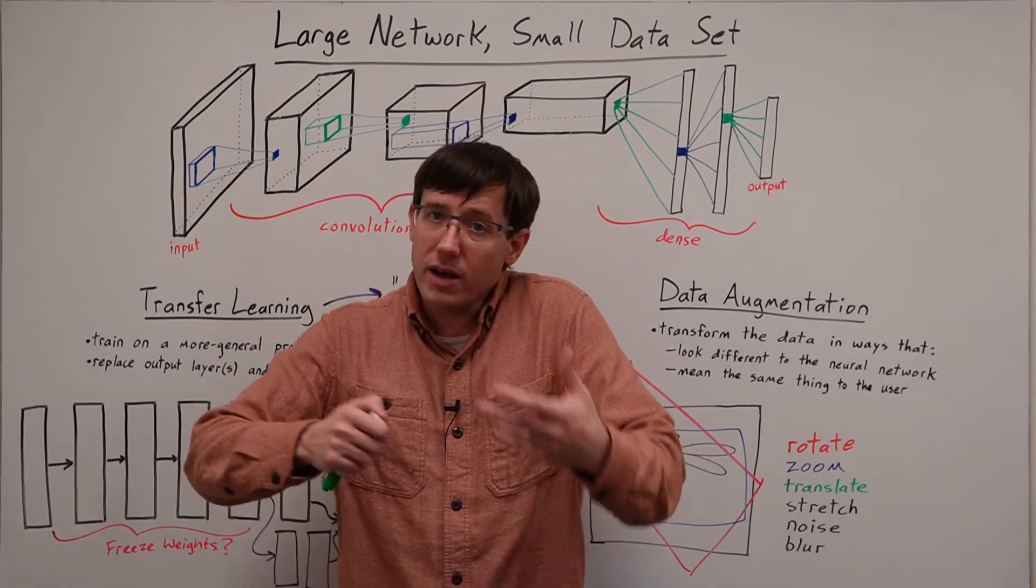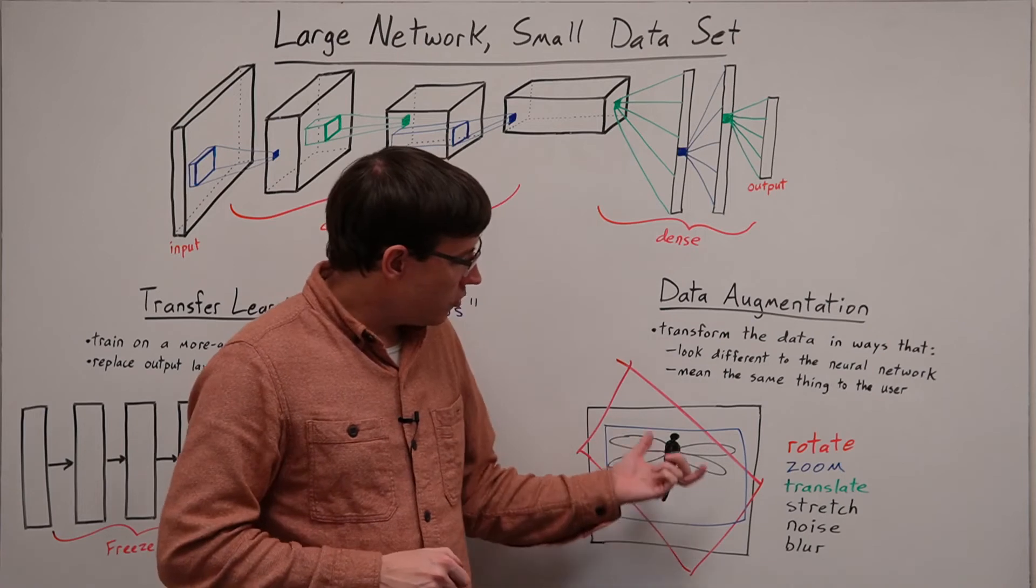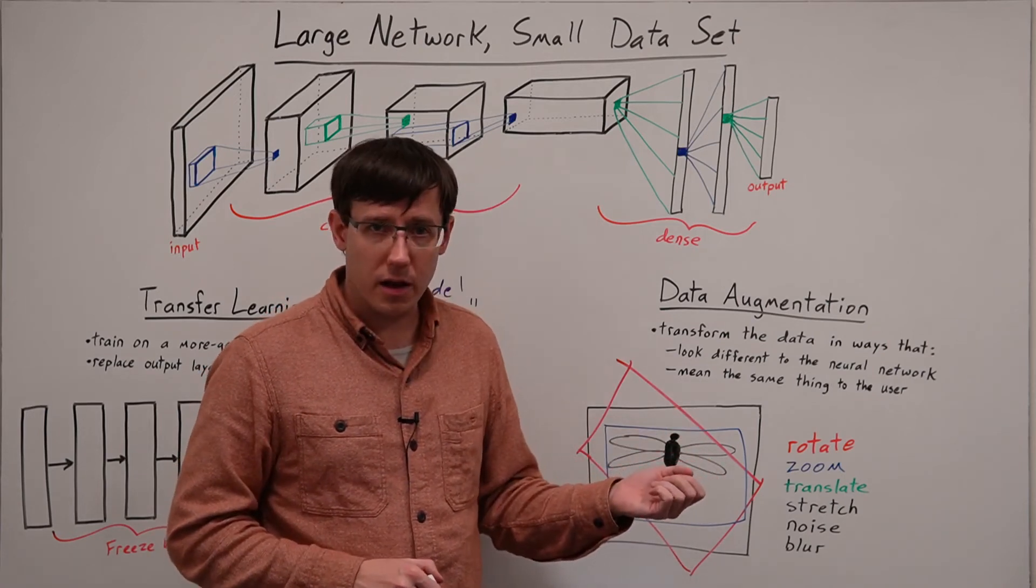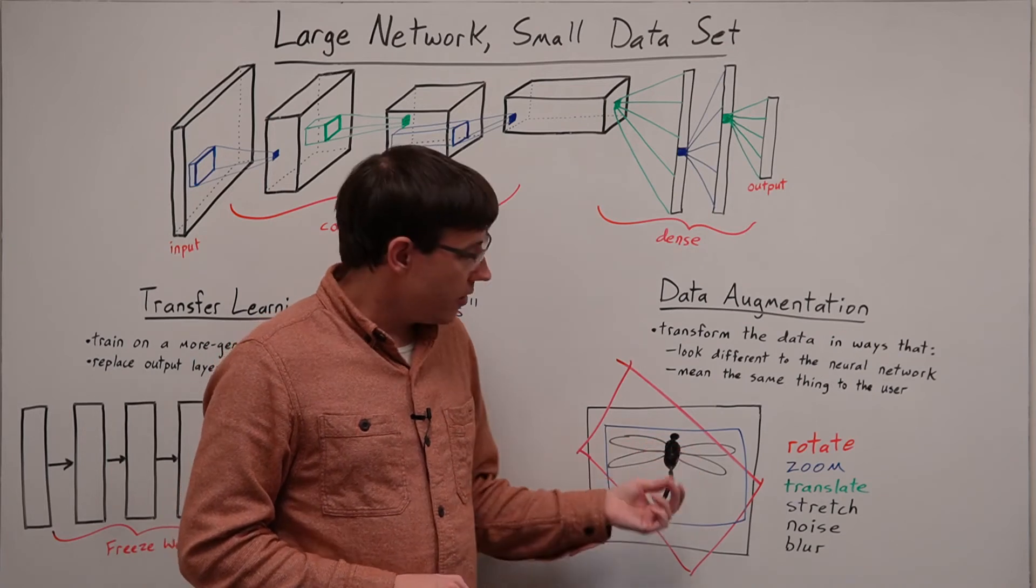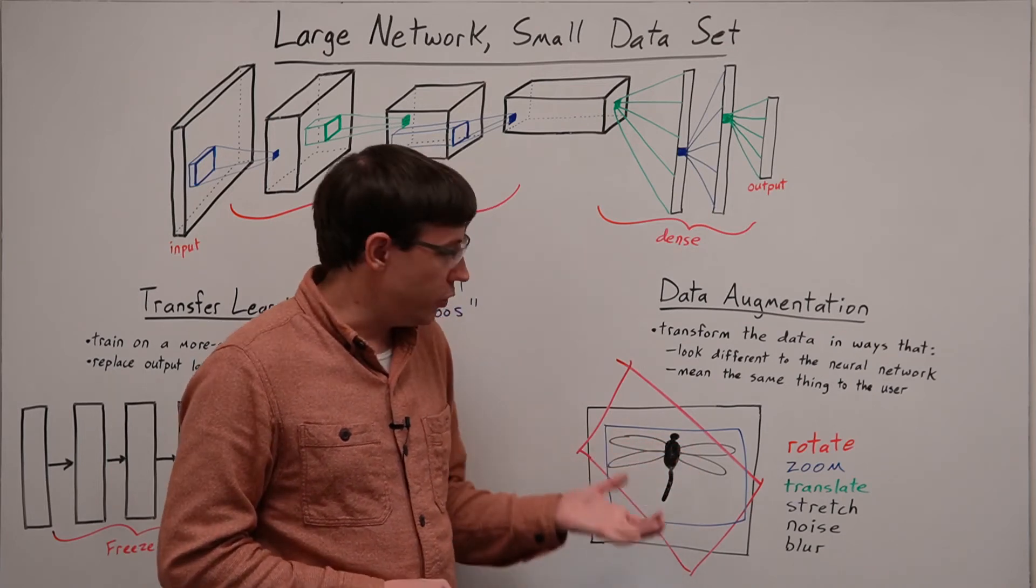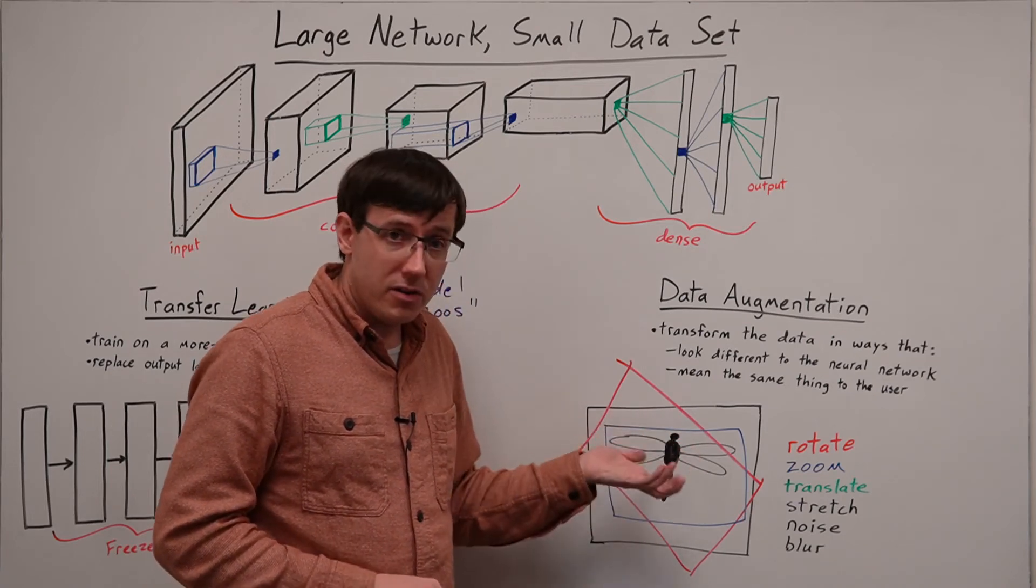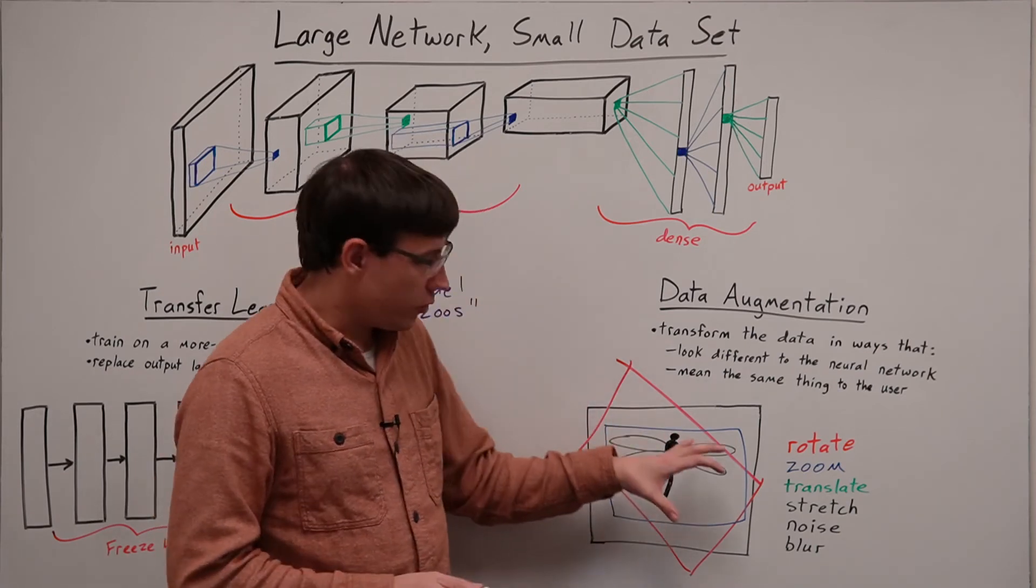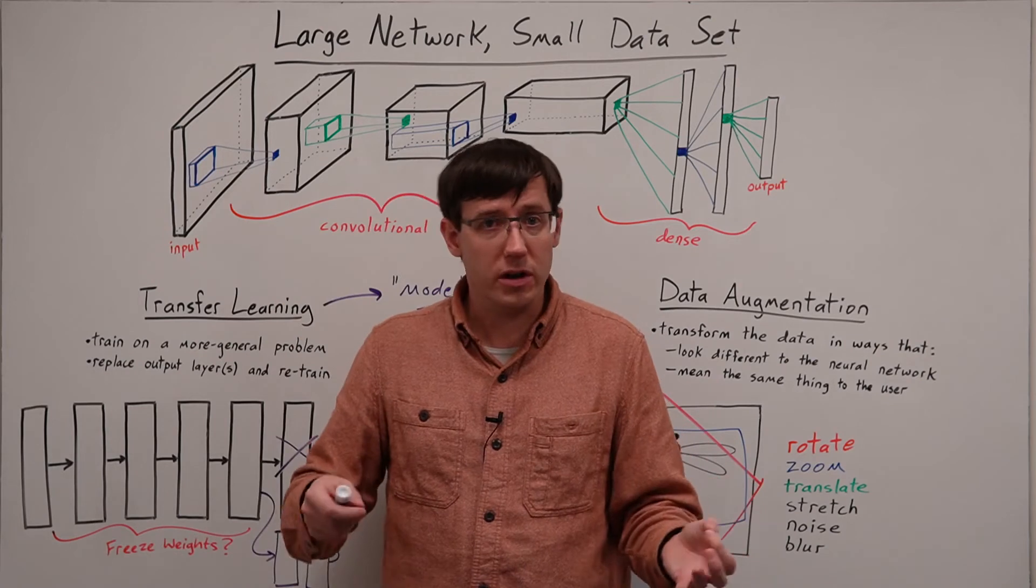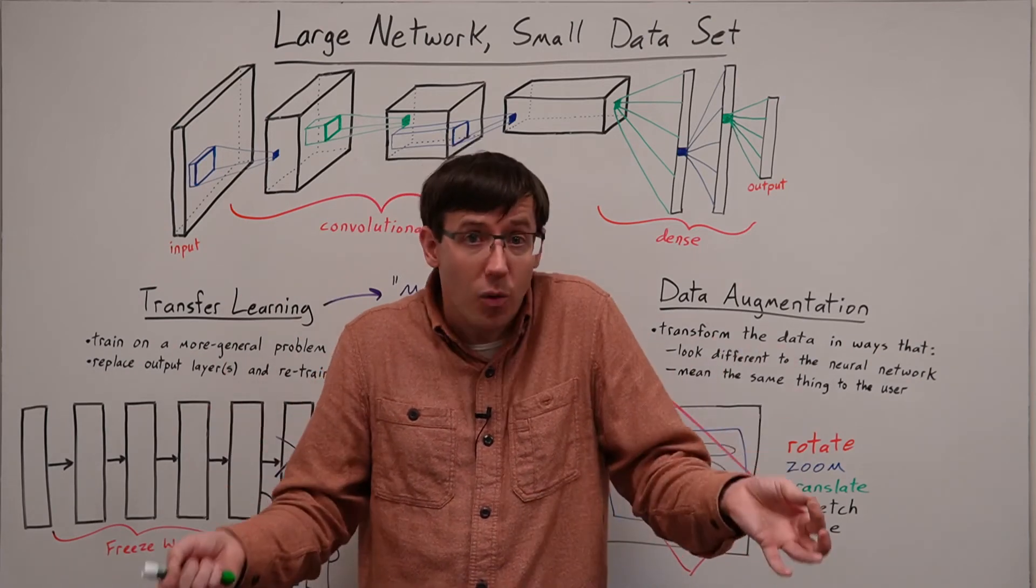But we do have to think about whether the transformations will change the meaning of the data. For example, if we zoom in too far, then it would no longer be possible to identify what insect is in the image. And we have to think about whether the transformations actually look different from the neural network's perspective.